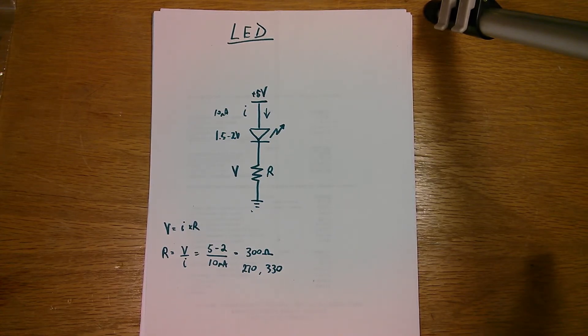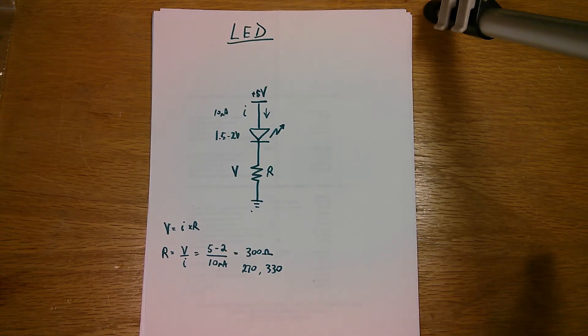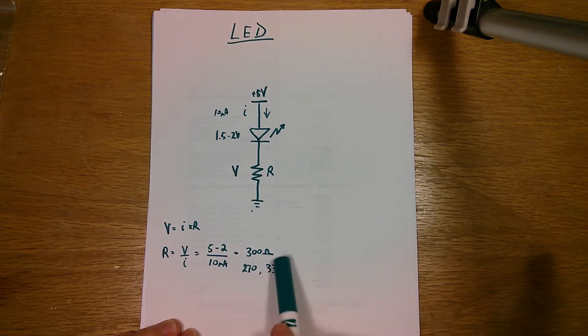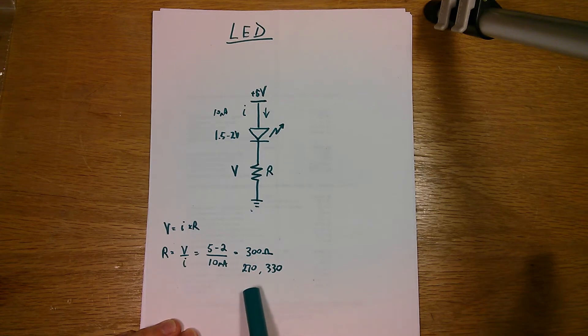And so that's how you do it. It's pretty simple. Put a resistor in series using this relationship. You can figure out the value of resistor.